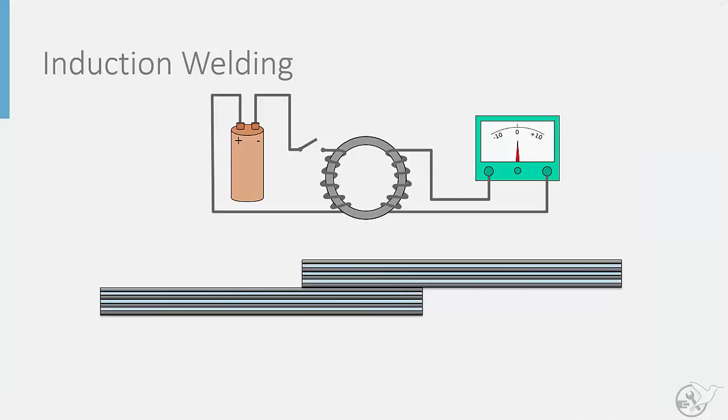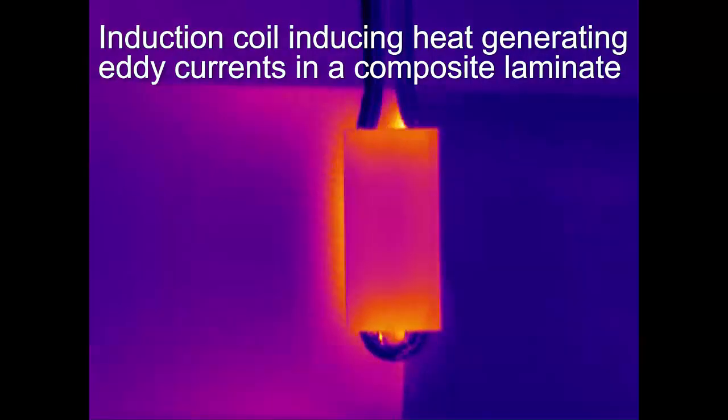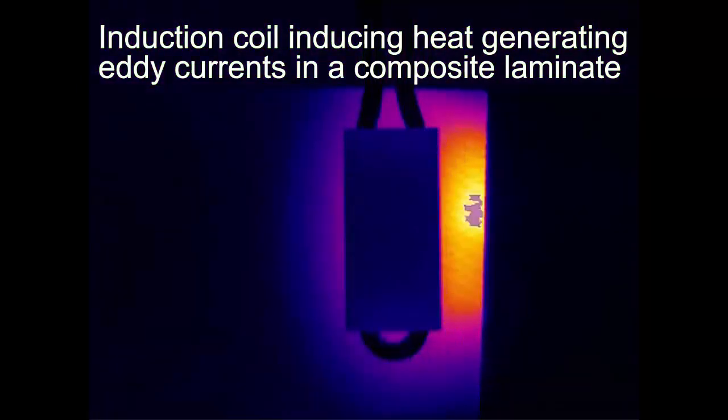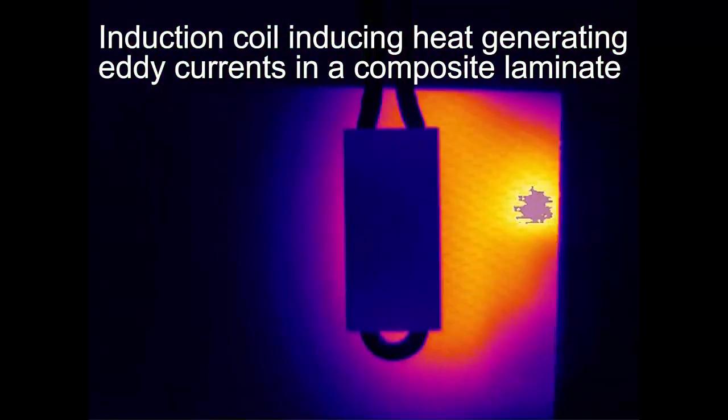Here we see a schematic of the induction welding process. By applying an electrical current to an induction coil, a magnetic field can be induced which will cause heat generating eddy currents within the carbon fibres inside the composite material. This heat will melt and fuse the thermoplastic resin between the parts, generating the final weld line.